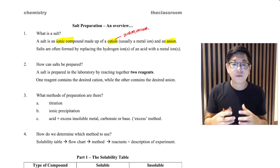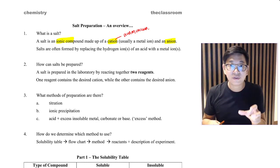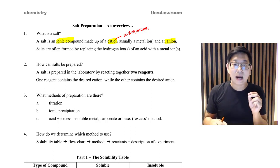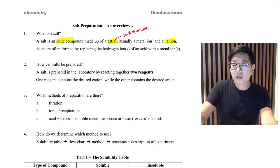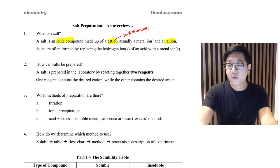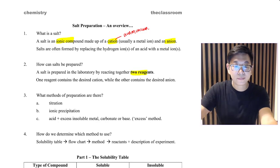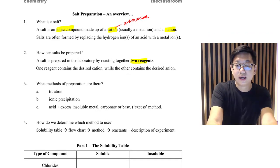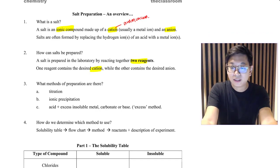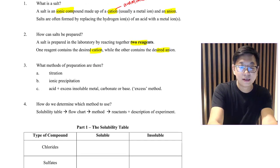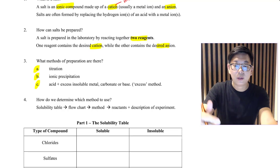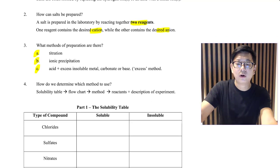A salt is formed when the hydrogen of an acid is replaced by a metal ion or an ammonium ion. Salts are prepared when you add two reagents together — one reagent must contain the cation and the other the desired anion. There are three methods to prepare salts: titration, precipitation, and what I call the excess method.